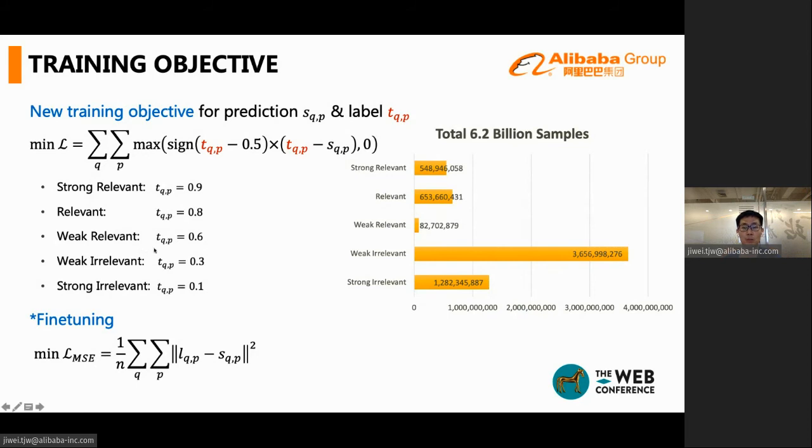For positive samples, we hope the model's predicted scores are higher than the threshold. For example, strong relevant samples, higher than the threshold, 0.9. And for negative samples, we hope the model predicted scores lower than the threshold. Like strong irrelevant samples, the scores should be lower than 0.1. Therefore, the loss function is designed to realize this setting.